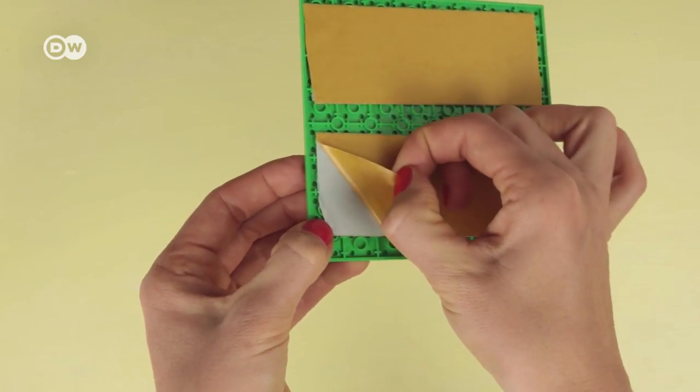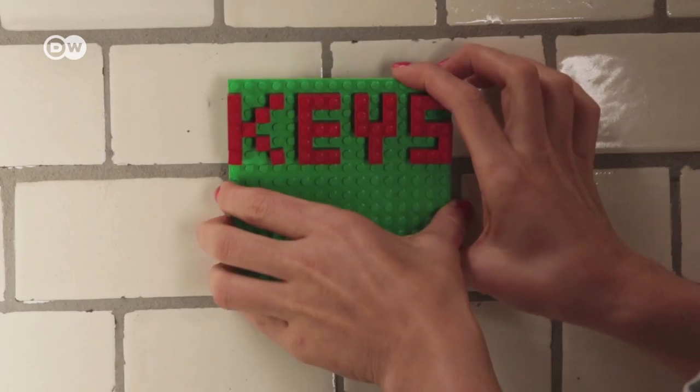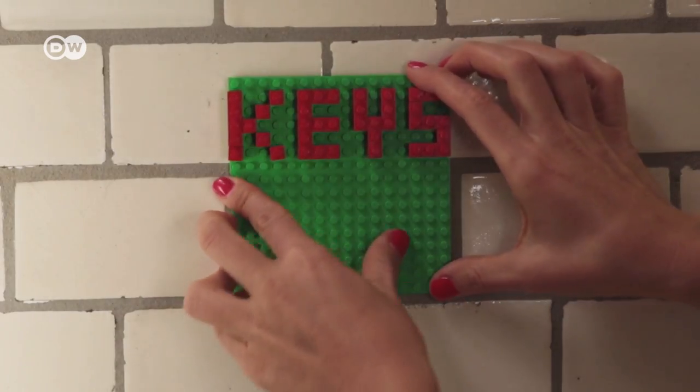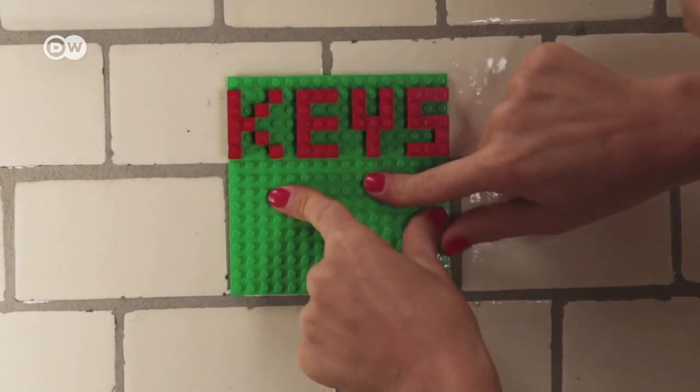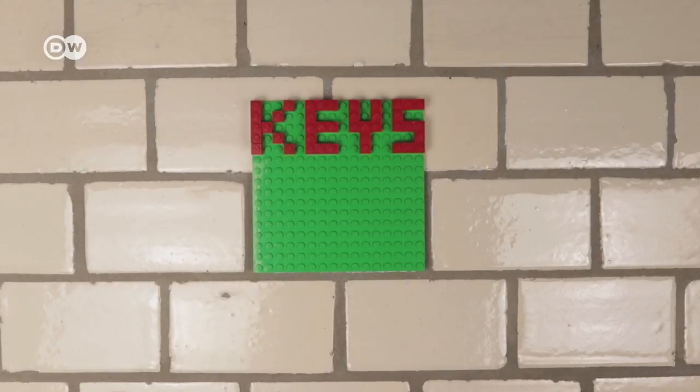Finish by pulling off the back side of your double sided tape and pressing the board against the wall firmly. Let it dry for 24 hours. And now your keyboard is ready to use.